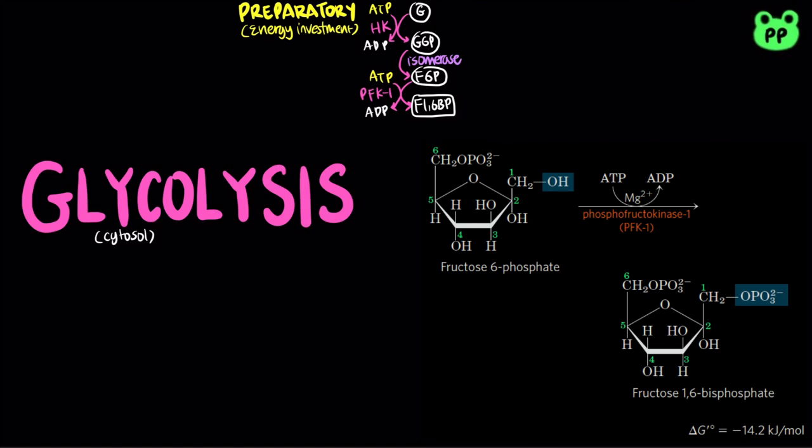The PFK1 reaction is irreversible, and it is the first committed step in the glycolytic pathway. Glucose-6-phosphate has other possible fates, which will be discussed later.